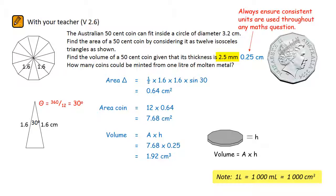So we have got 1000 centimeters cubed of molten metal and we want to know how many coins, each taking up 1.92 centimeters cubed, you can get out of that. So we just have to divide 1000 by 1.92. The answer works out to be 521 coins.